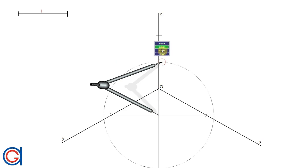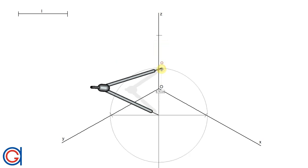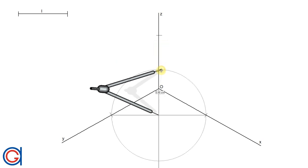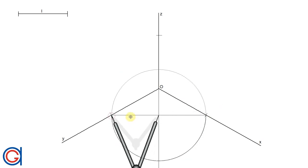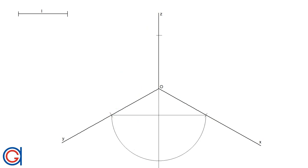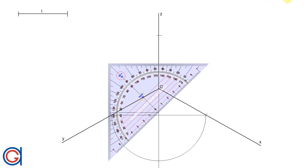Setting our compass on this new point and with a radius to one end of the horizontal line, we are going to draw a semicircle as can be seen here. This semicircle cuts the z axis elongation at a new point which we will call O in brackets.